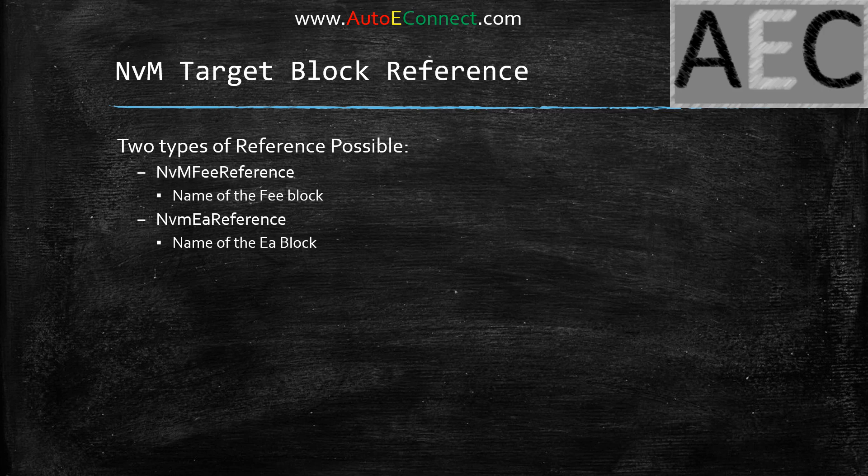NVM Target Block Reference: since NVM can write to either internal flash (FE) or external EEPROM (EA), you must give the respective FEA reference or EA reference for each NVM block, pointing to the already-configured module in the ECU abstraction layer that handles the target memory device.